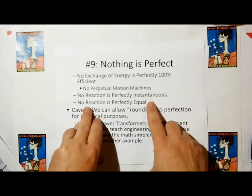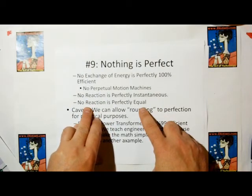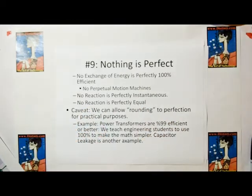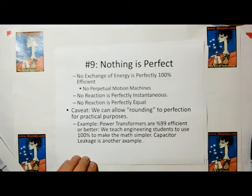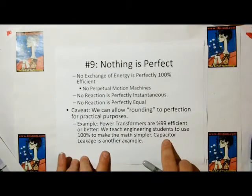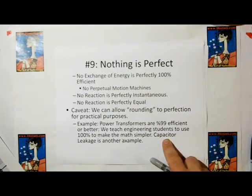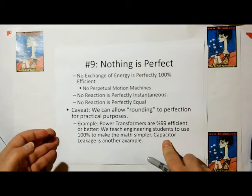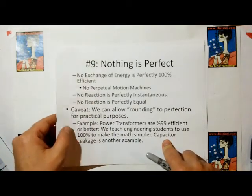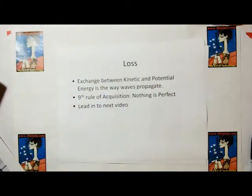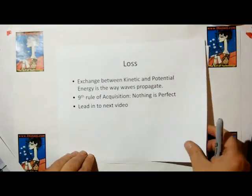But I'm going to continue discussing the nothing's perfect. No reaction is perfectly instantaneous. No reaction is perfectly equal. From that, you can probably figure out who else is in my crosshairs coming up. But now, we can allow rounding to perfection for practical purposes. For example, power transformers are 99% efficient or better, and we teach engineering students to use 100% to make the math simpler. Even though we know it's not perfect, it's close enough. Capacitors have very minimal loss. But we always assume we're going to get the energy out of the capacitor that we put in because it's close enough. They're good enough to be considered perfect even though we know they're not perfectly perfect.